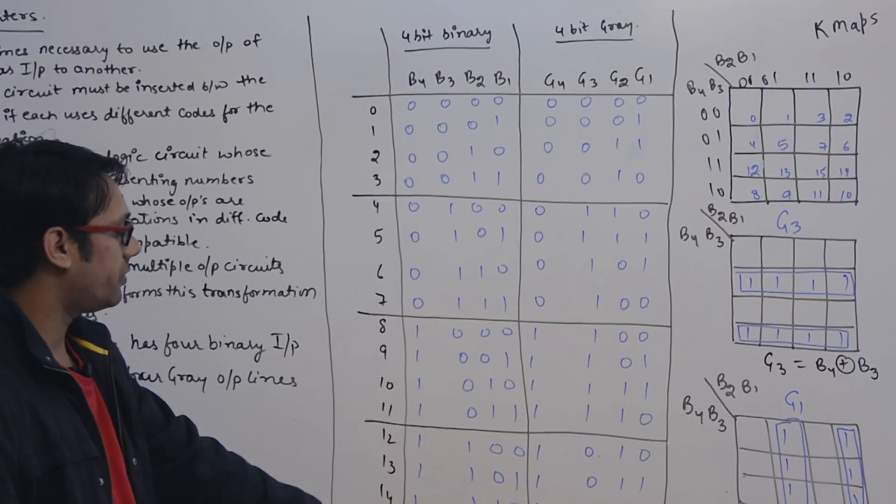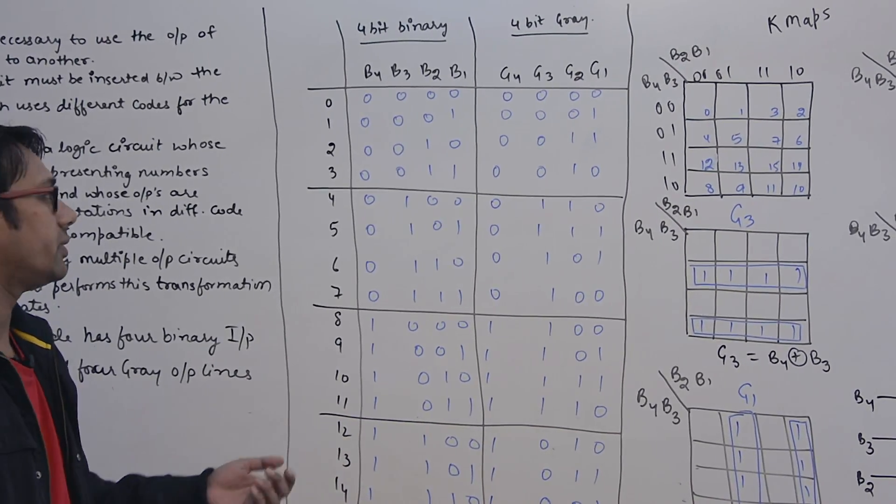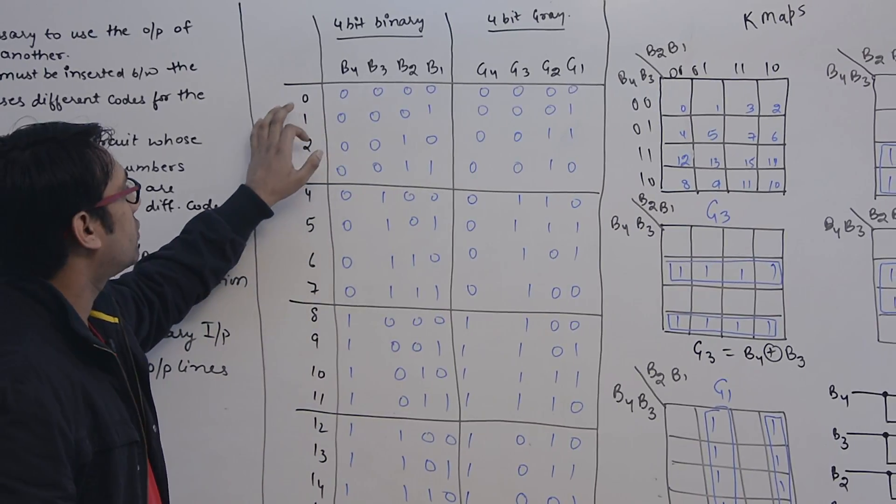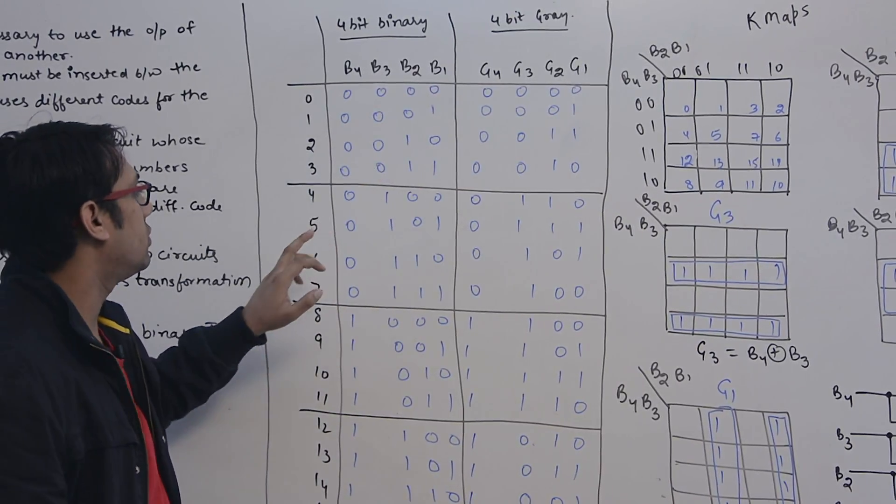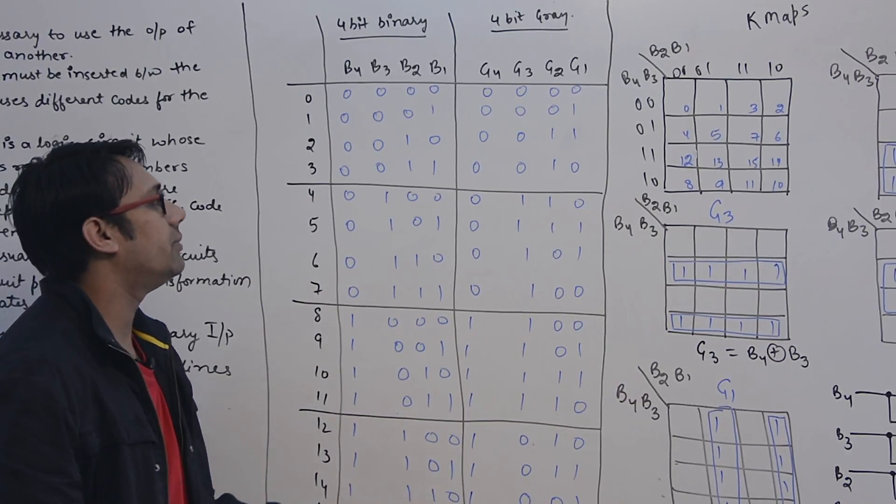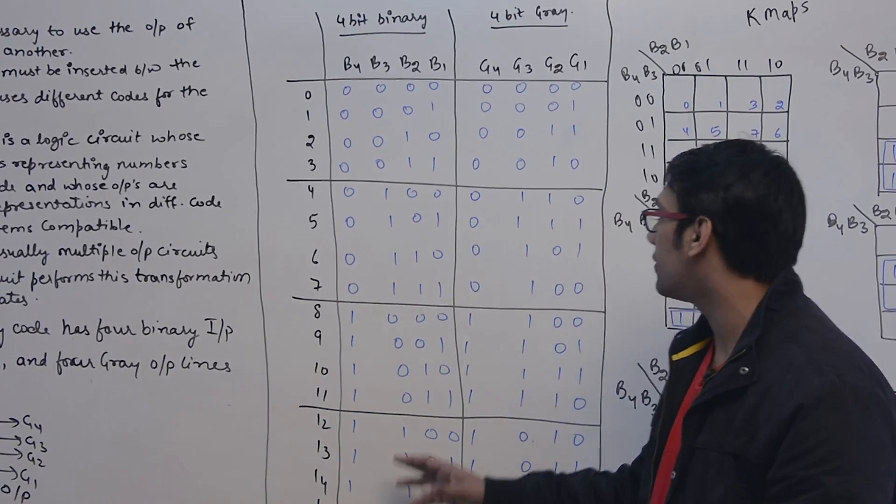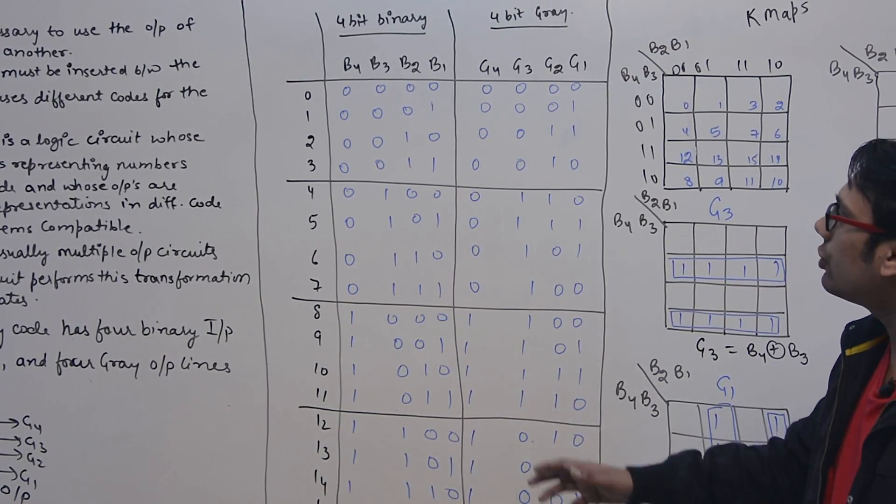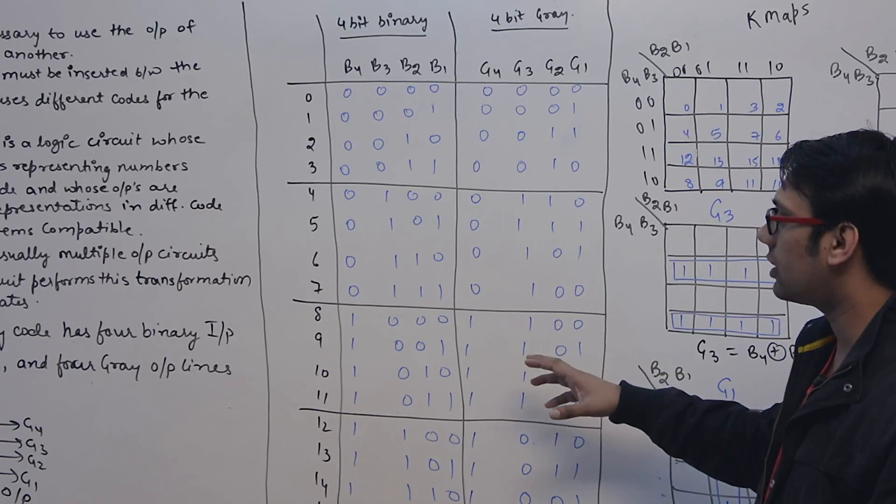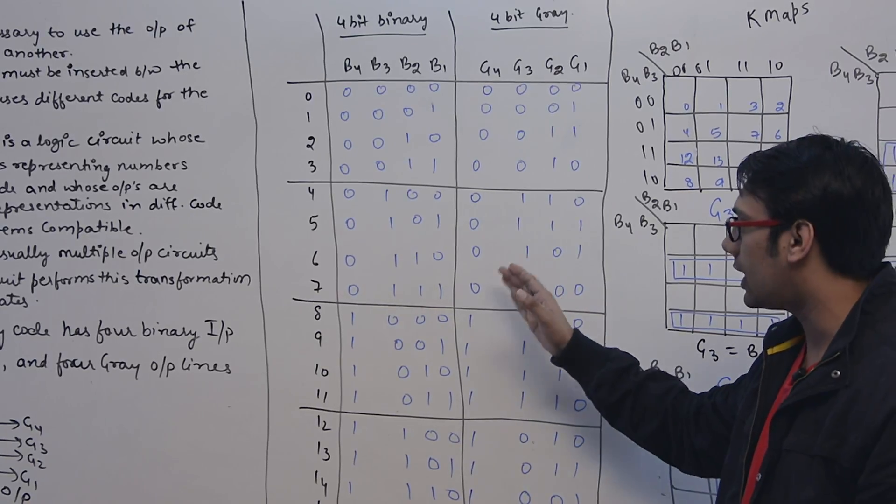To design the code converter, we are going to use a code table treating as a truth table to express each output as a boolean algebraic function. For example, this is representing a 4-bit binary code. With 4-bit binary code, there are 16 combinations possible which are representing the numbers between 0 to 15. So if we want to represent 0, this is 0000; if you want to represent 5, then this is 0101.